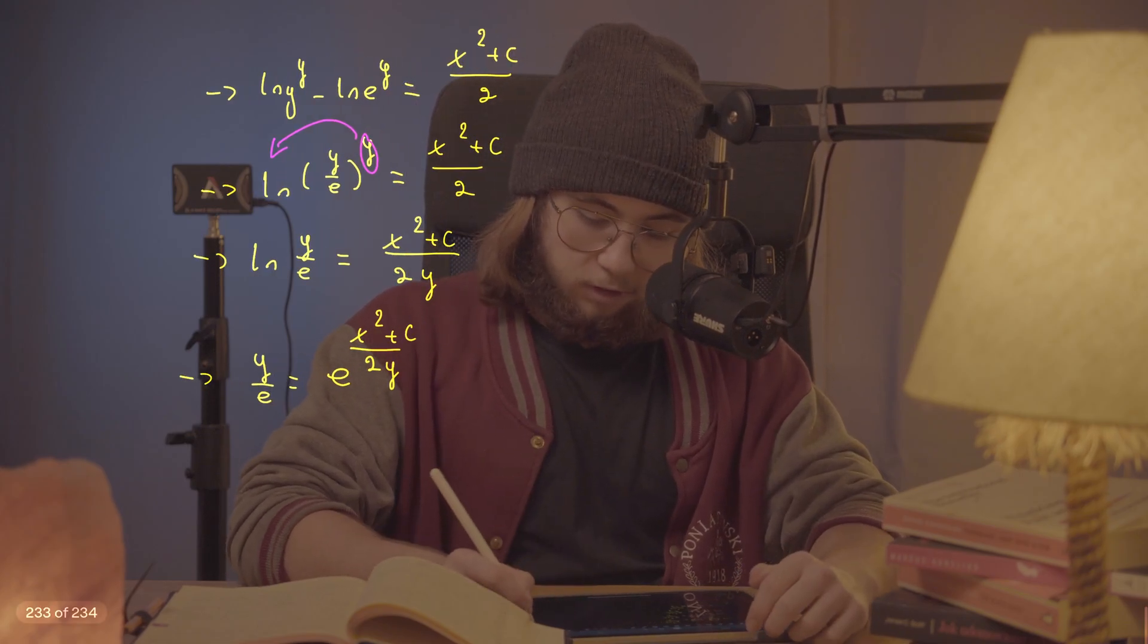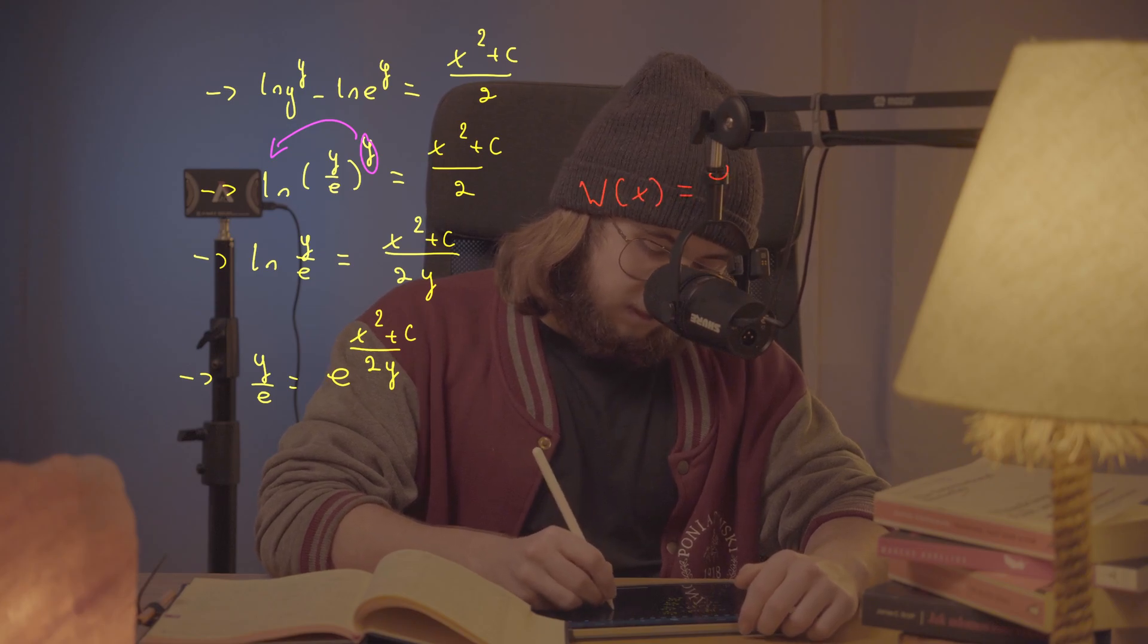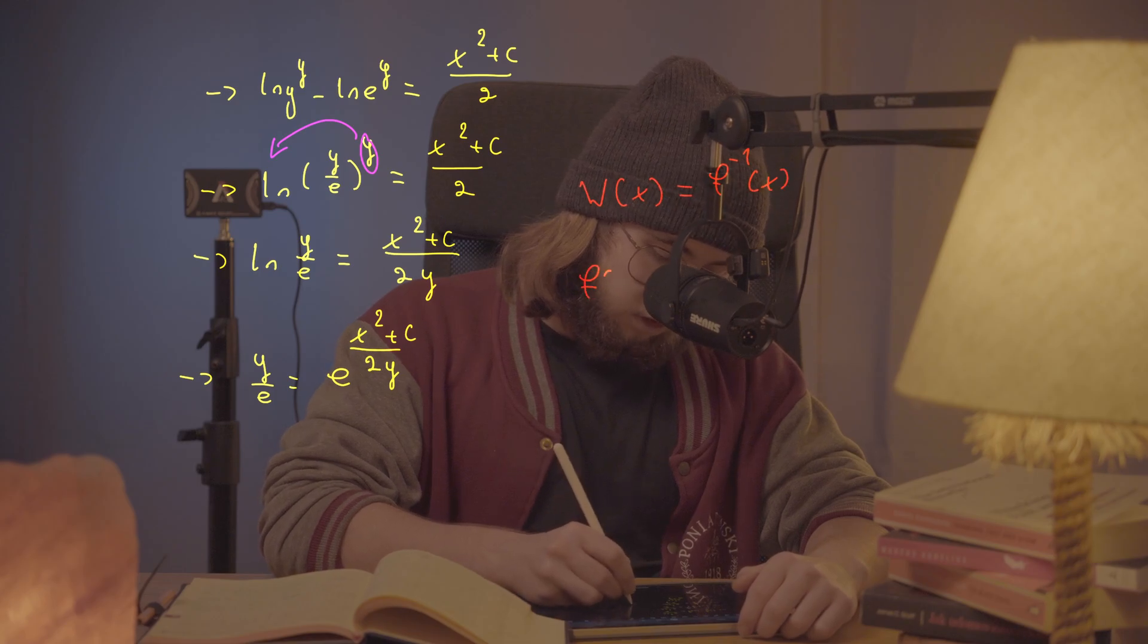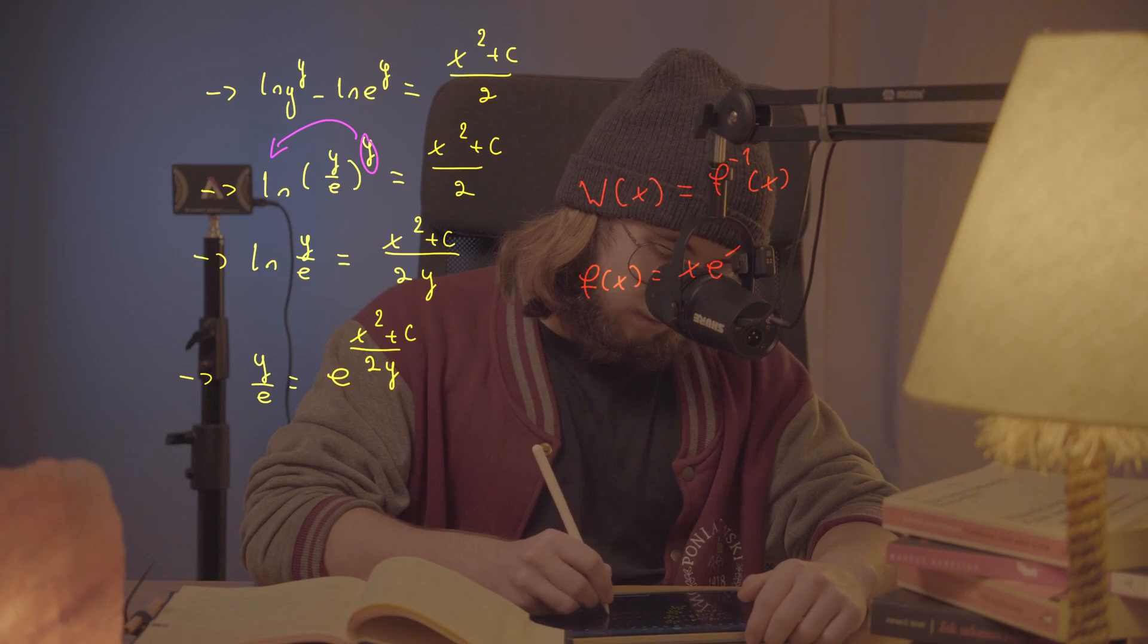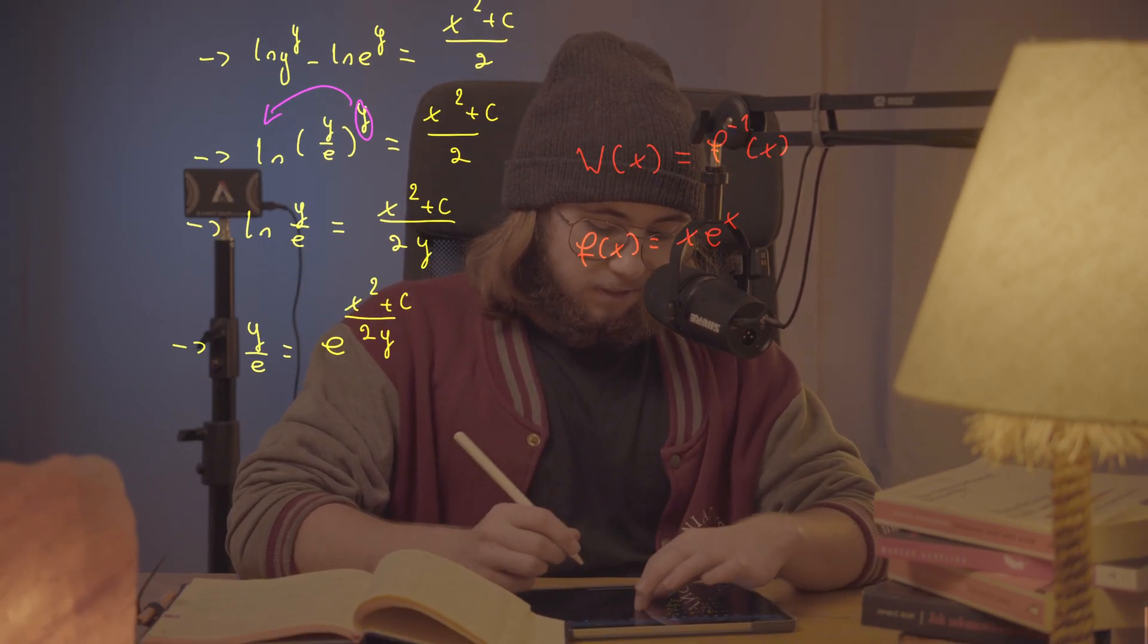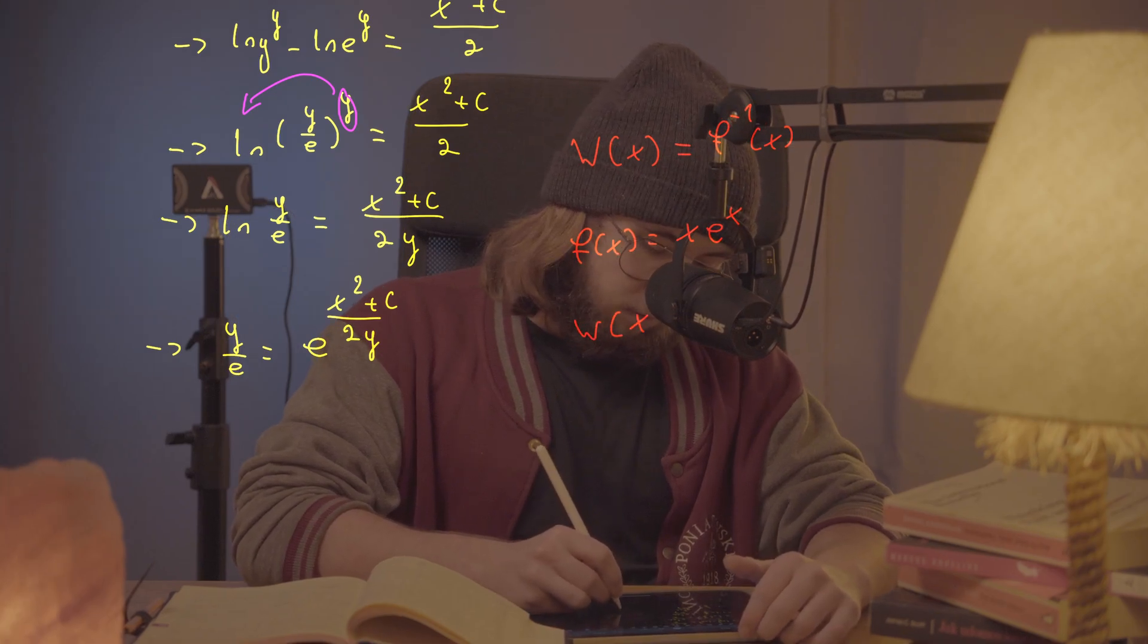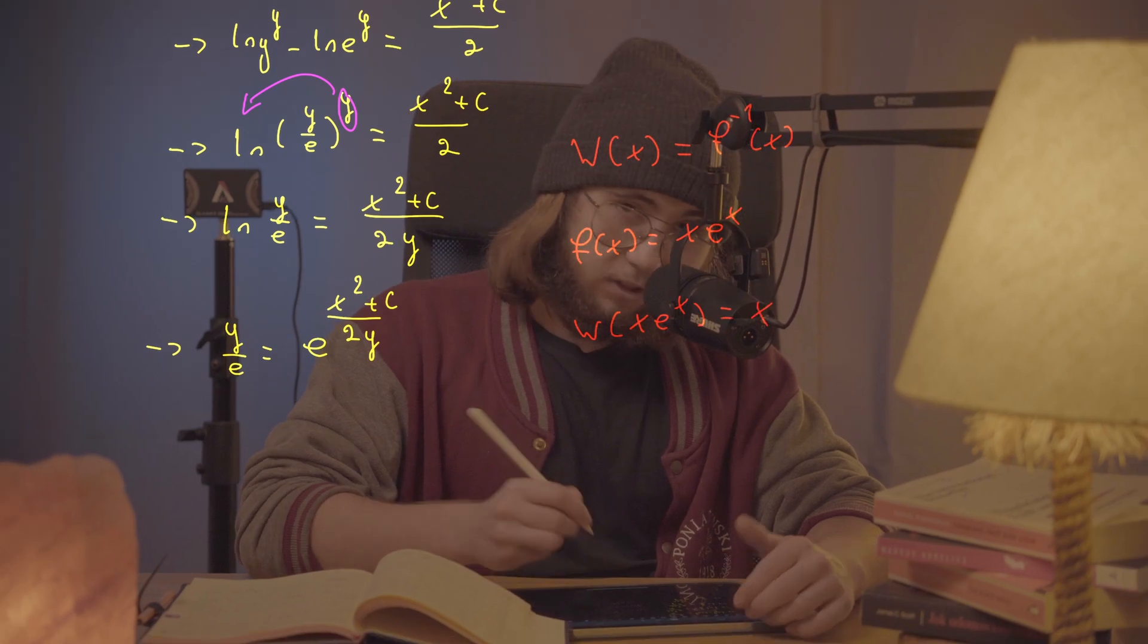The Lambert W function, which is denoted as the capital W of x, is defined as the inverse function of the function f(x) = x times e^x. So what it really means is that the W function, so the Lambert W of x times e^x is the same as just x.